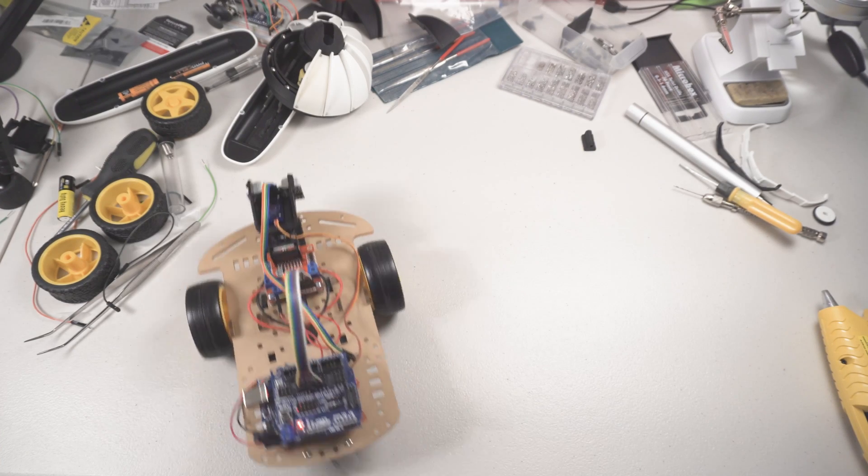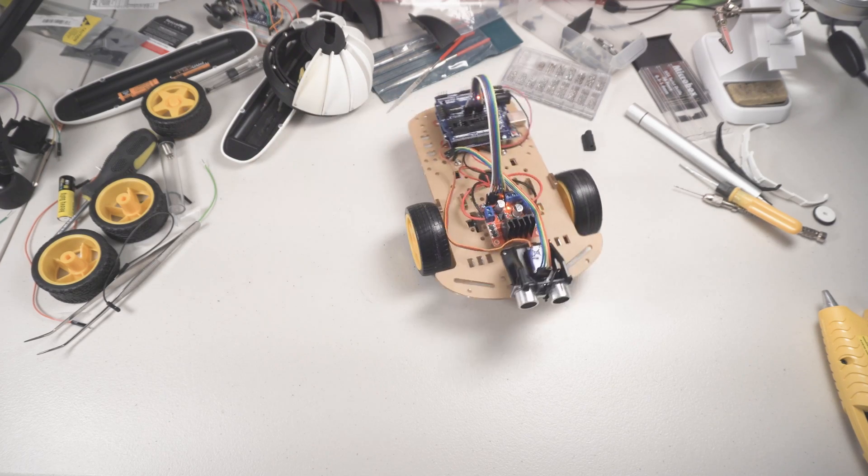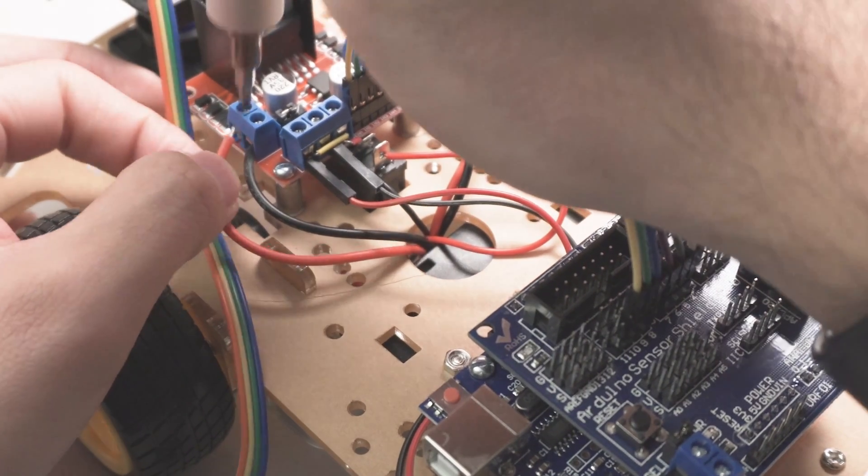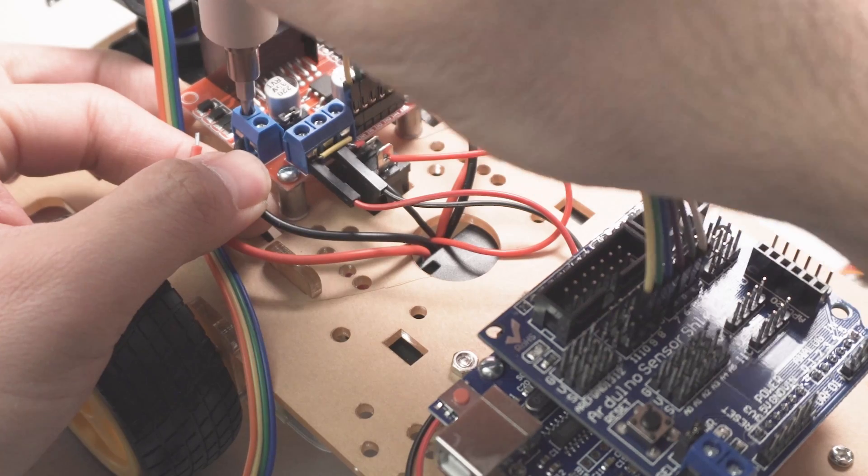You can see that it's not going straight, but that's something we can tweak later in software. If one of your wheels is reversed in the beginning of the program, that means the motor is miswired. Just switch the two wires on the L298N.